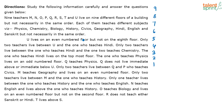It is given that U is living on an even numbered floor and not on the eighth floor. So U can either be on floor number two, four, or six — those are the only possibilities.